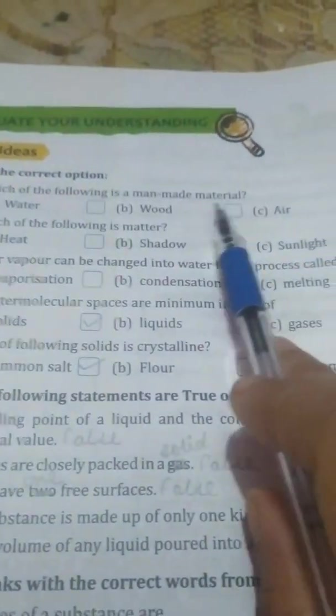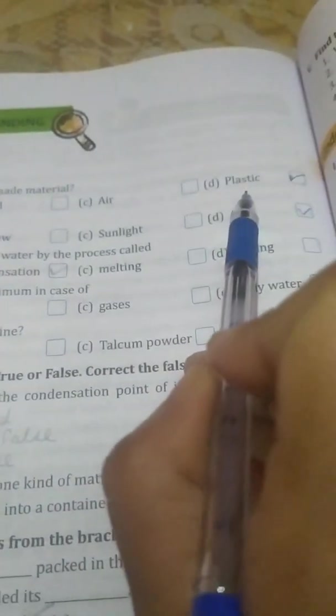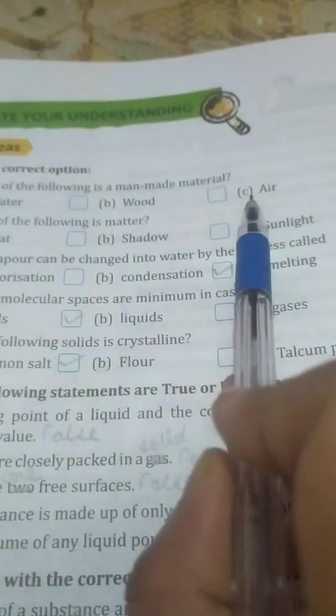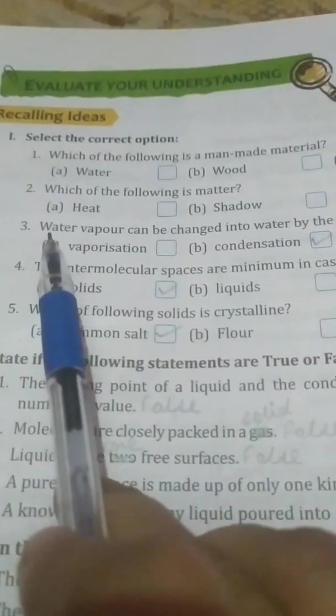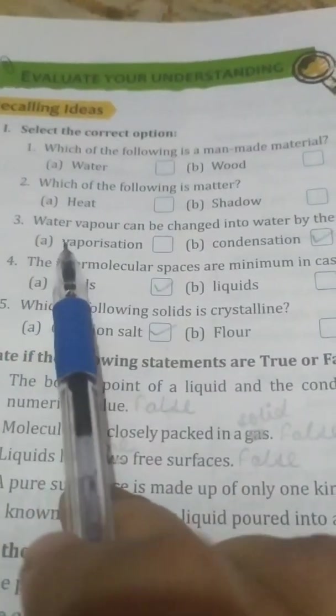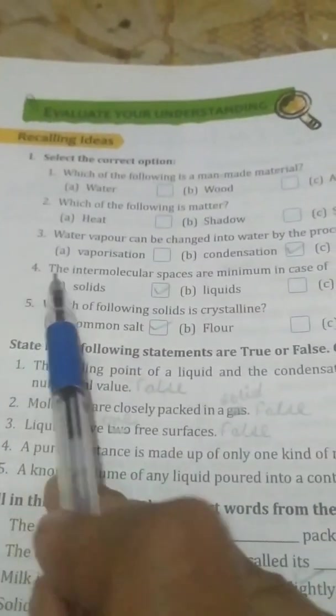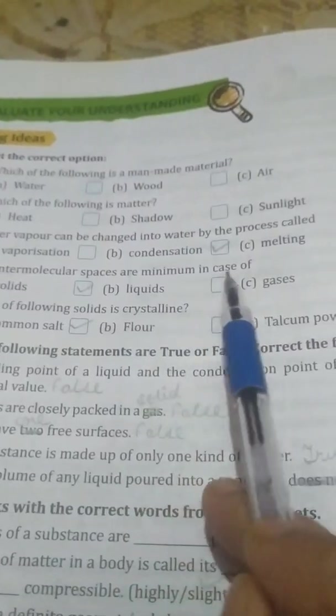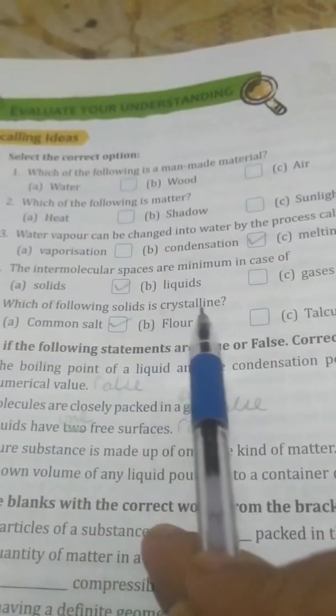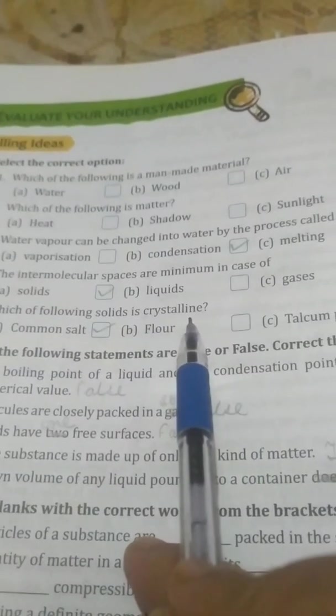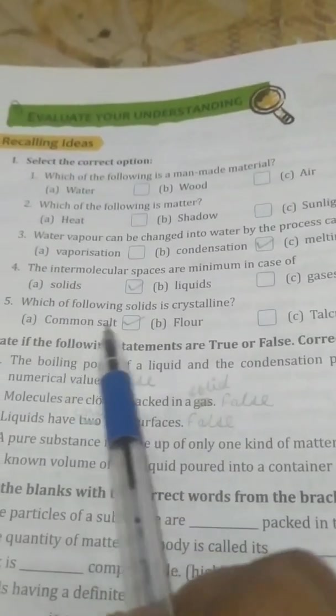First, which of the following is a man-made material? Plastic is the man-made material. Water, wood, and air are natural things. Second, which of the following is matter? The correct option is air because air occupies space and has mass. Third, water vapor can be changed into water by the process called condensation. Fourth, the intermolecular spaces are minimum in case of solids. Fifth, which of the following solid is crystalline? Common salt is the correct option.